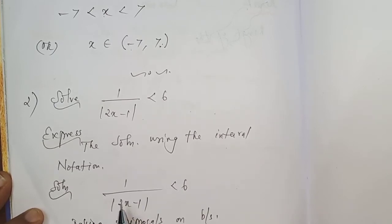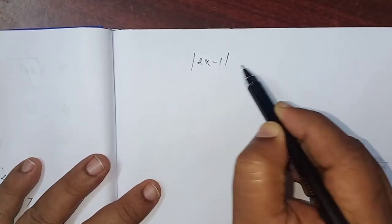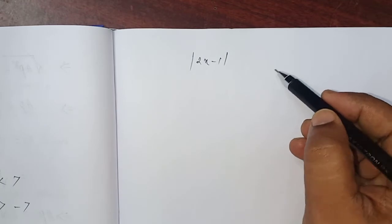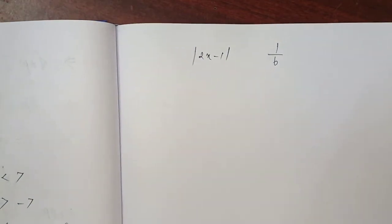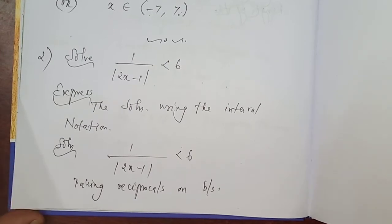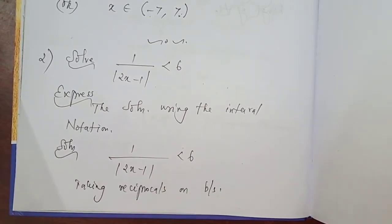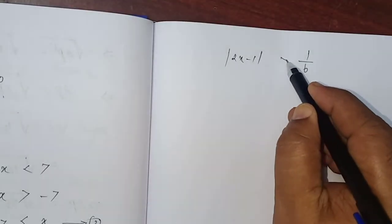If you take reciprocal, the reciprocal of 1 by modulus of 2x minus 1 is modulus of 2x minus 1. 6 reciprocal is 1 by 6. Once you take the reciprocal, the symbol has to be changed. Less than becomes greater than.